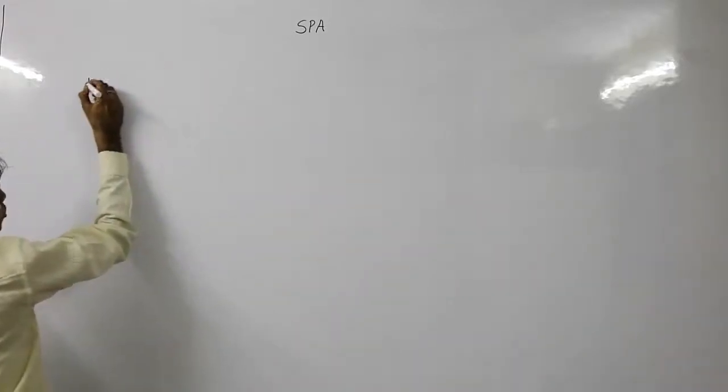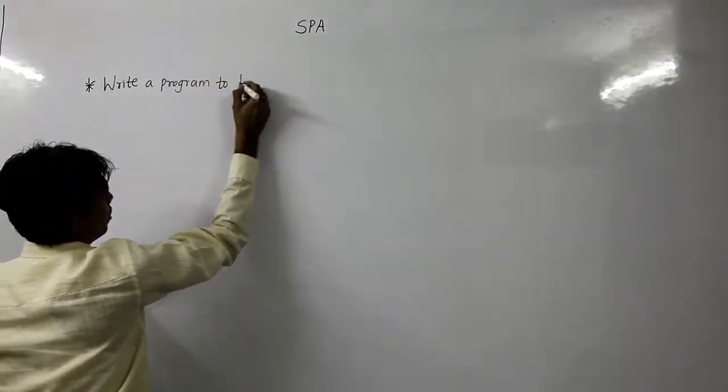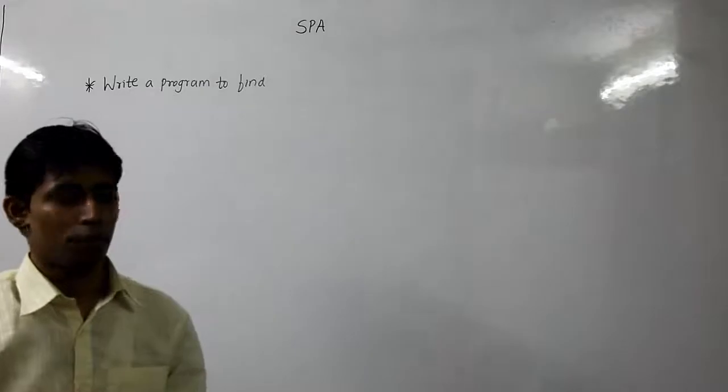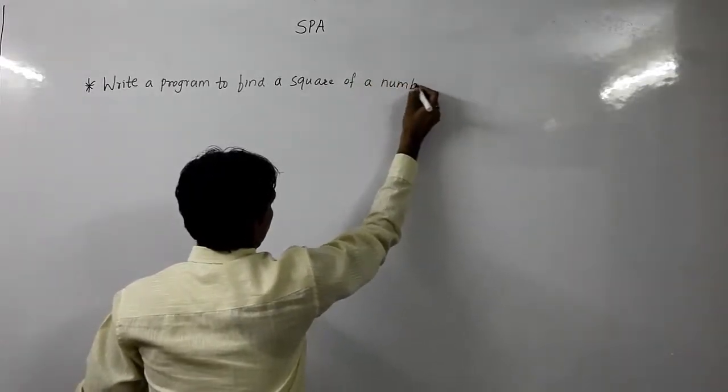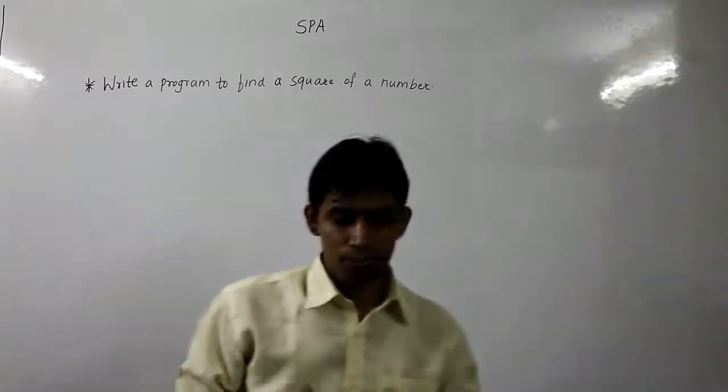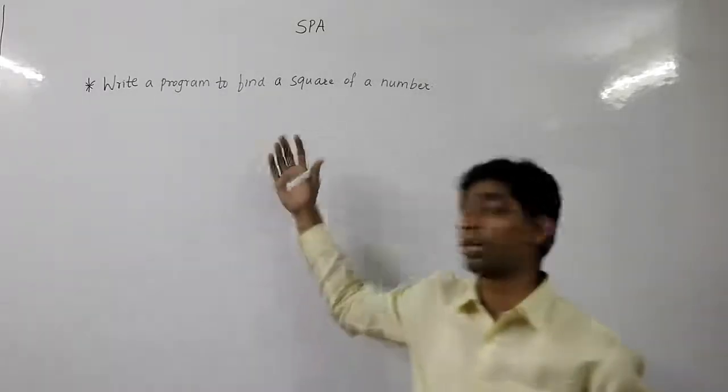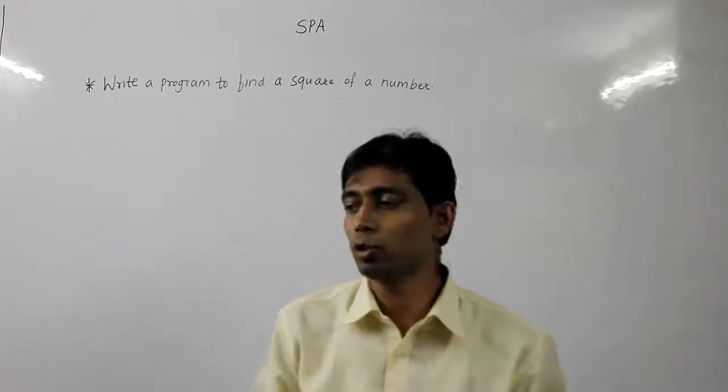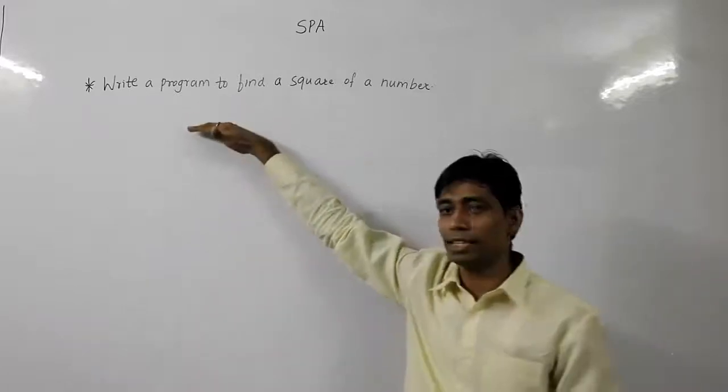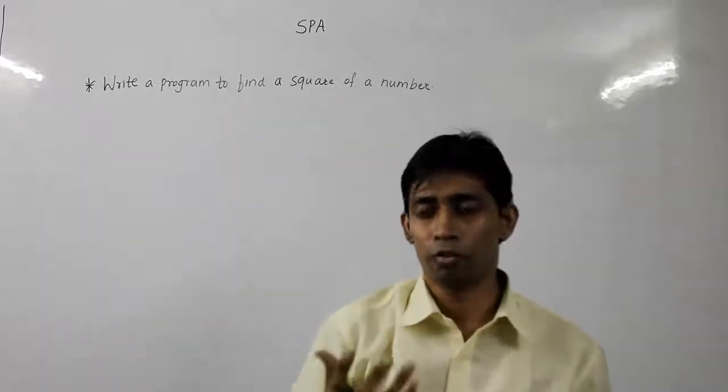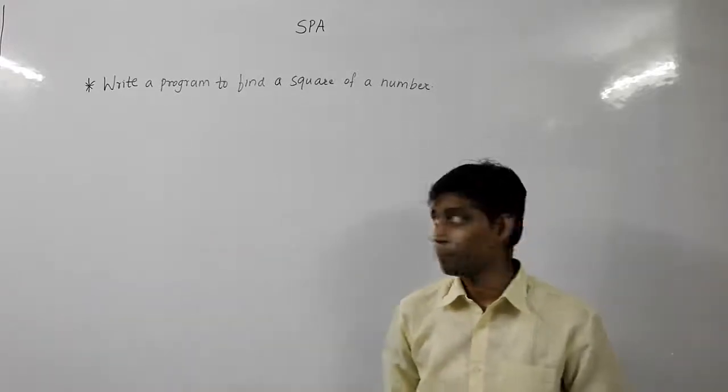The program that we are supposed to write is to find a square of a number. To find a square of a number, first of all, the computer needs a number, so user has to input a number. Secondly, computer will do its calculations, square it and he has to display the number. So our program basically will consist of writing the steps so that it accepts a number from the user, it carries out the calculations then it displays the output showing the square of a number.